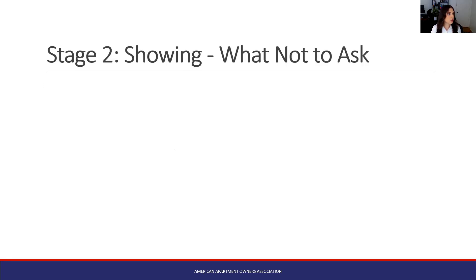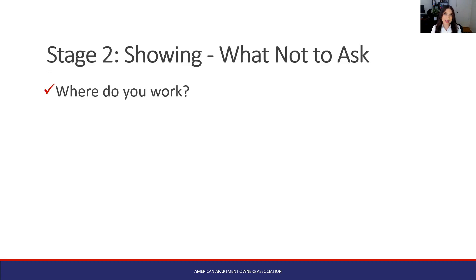Stage two: the showing. This is if you meet them in person, though it may also be a virtual showing. What are some questions you should not ask when meeting that individual? 'Where do you work?' — this makes the applicant think they need to be employed for tenancy and would force people with disabilities to disclose that to you. What you want to do is let applicants provide that information on the application. In a lot of states, you just can't discriminate based on source of income. Having the application filled out with that information is the best way to gather their employment details.